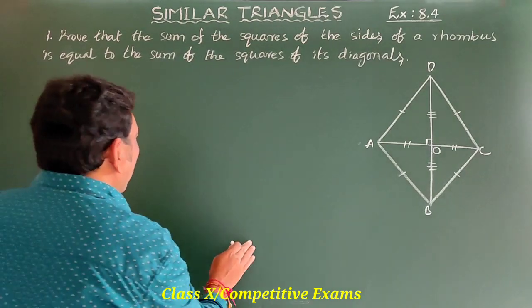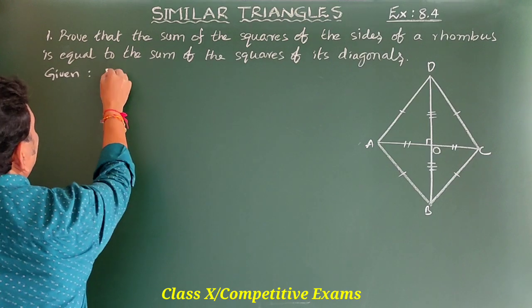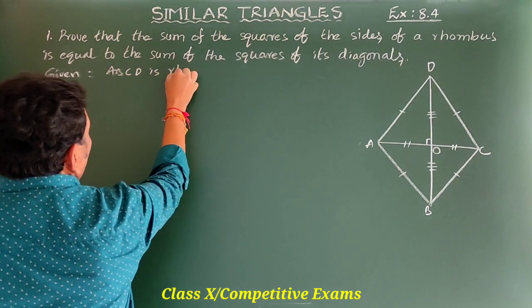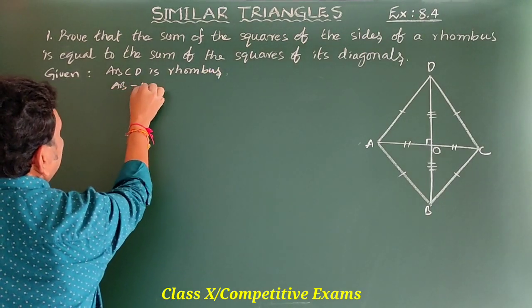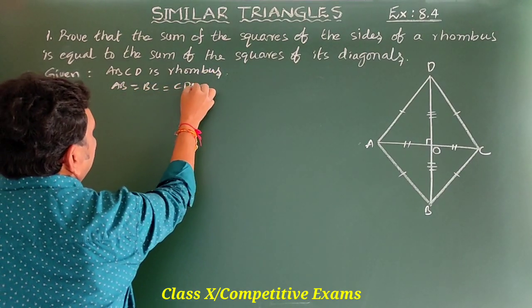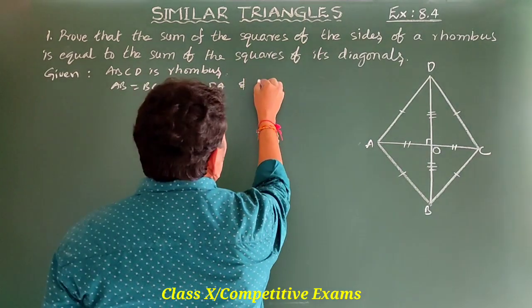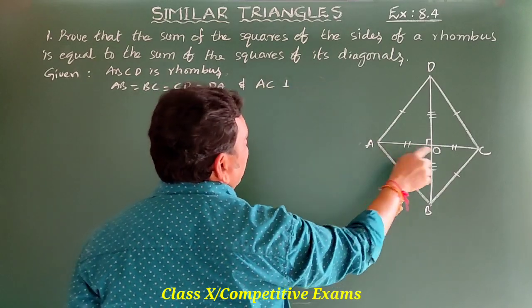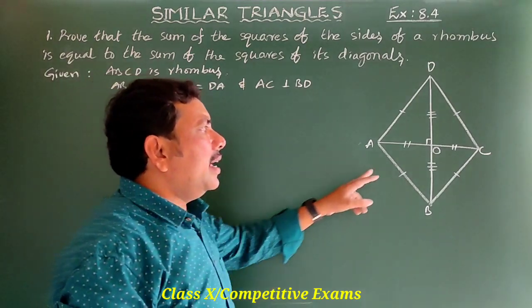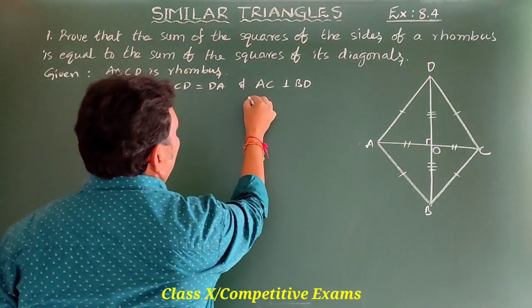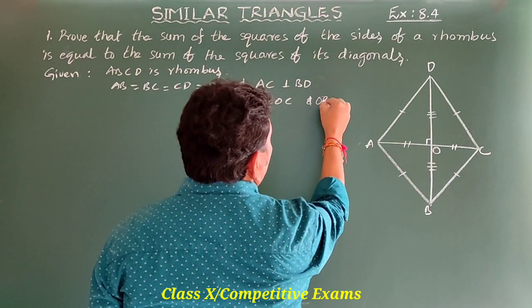Given: ABCD is a rhombus, so AB = BC = CD = DA. And AC is perpendicular to BD, so OA = OC and OB = OD.